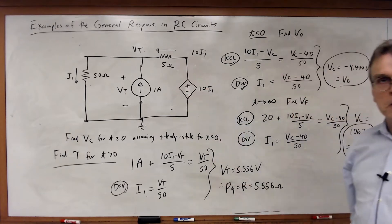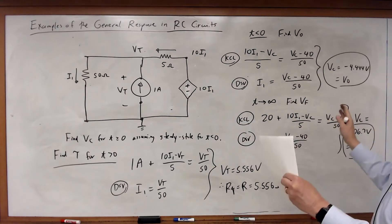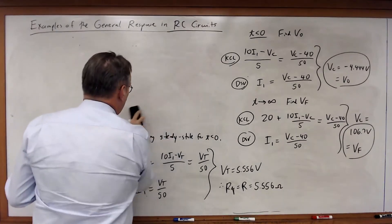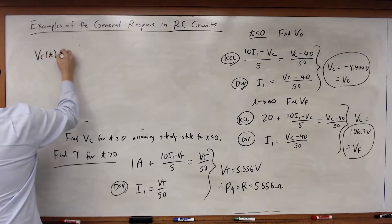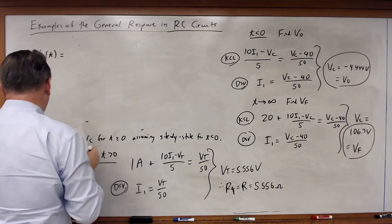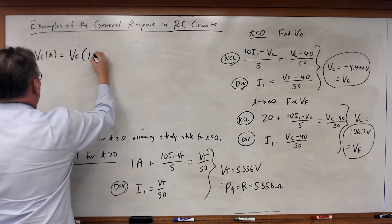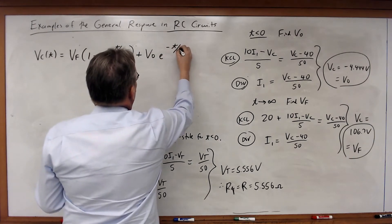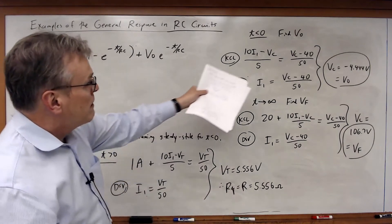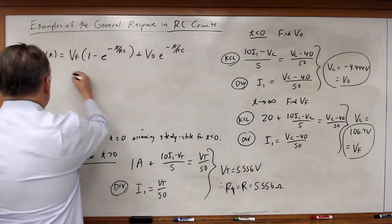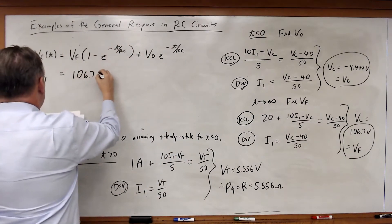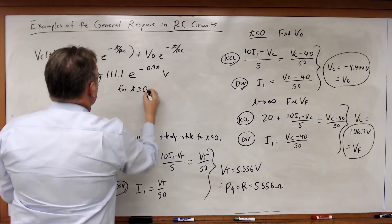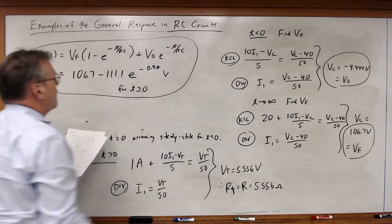Using nodal analysis and Thevenin's theorem, I can now plug everything into the general solution equation. VC of t equals the final value times (1 minus e to the minus t over RC) plus the initial value times e to the minus t over RC. Plugging in VO, VF, and RC, I get: VC equals 106.7 minus 111.11 times e to the minus 0.9t volts, for t greater than or equal to zero. And there's my answer for VC.